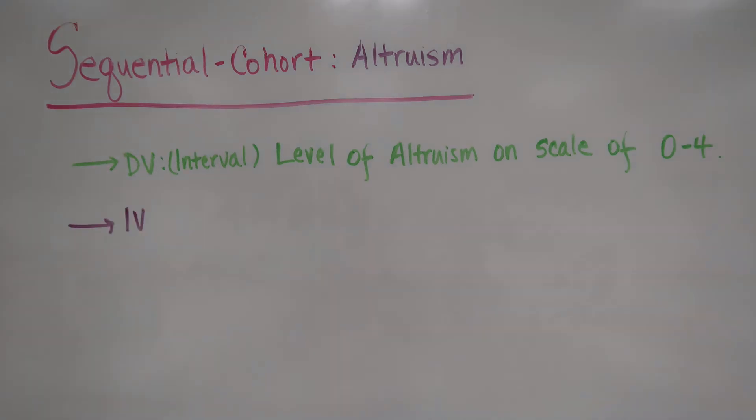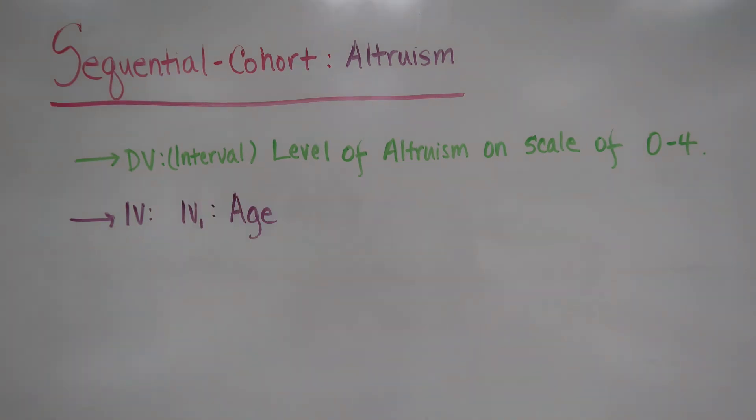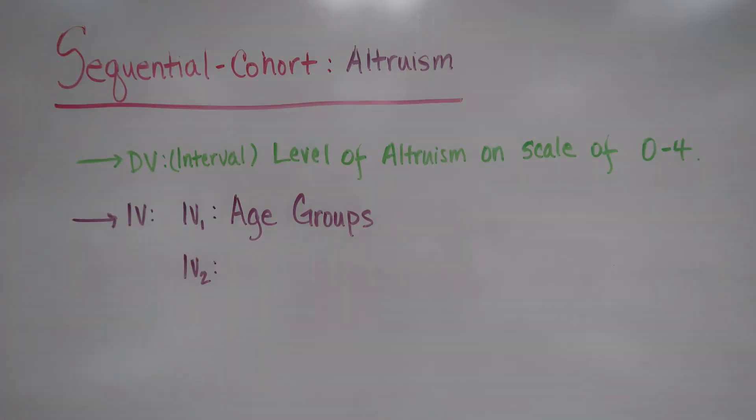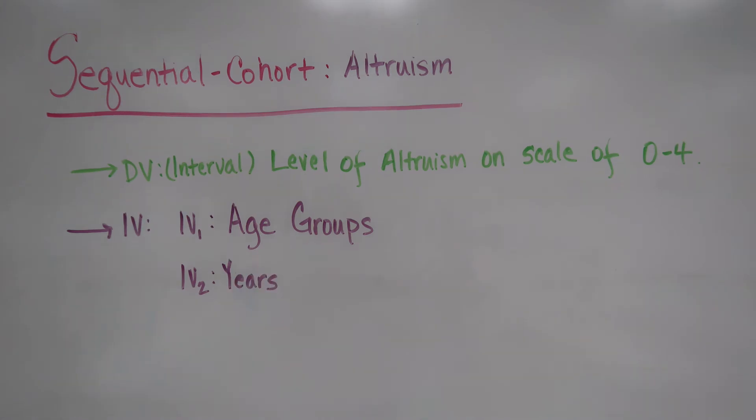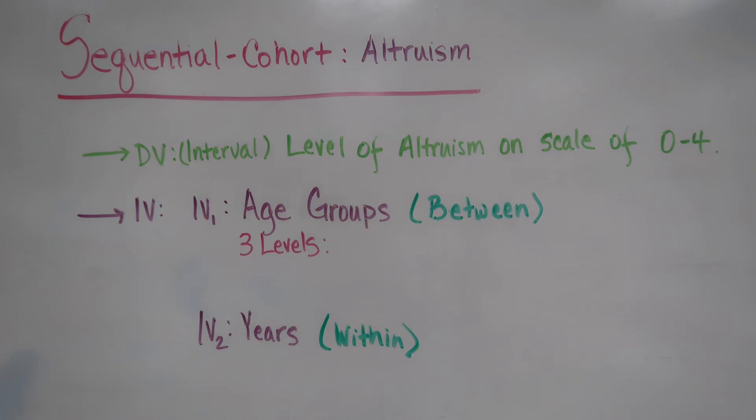Our independent variables, which are broken down in two groups, are nominal. The first one being between subjects group, consisting of our three age group levels, baseline at 12, 15, and 18 year olds.